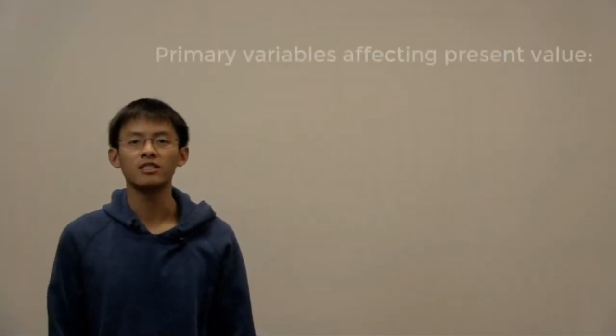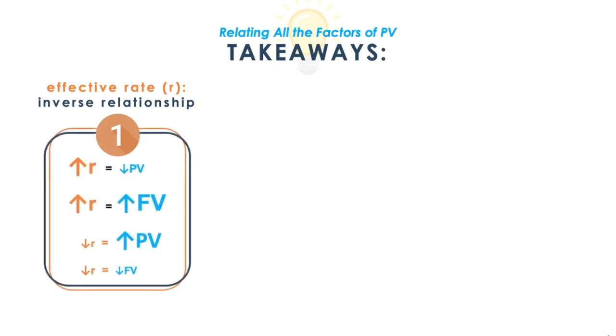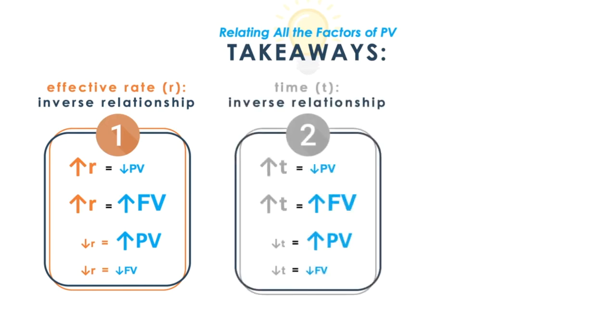In this video, we unpacked the levers that contribute to calculating present value. In doing so, we identified that: 1. There is an inverse relationship between R, the effective rate, and PV, such that as rate increases, present value decreases. This is because, at higher rates, you need less money today to save up for that $4,000 iPhone 20 in 10 years. 2. There is an inverse relationship between T, the time horizon of the investment, and PV. As T increases, present value decreases. This is because, the longer you invest your money, the more time it will have to grow, and thus, the less money you will have to invest today to save up for that $4,000 iPhone.